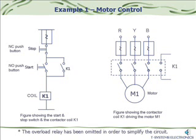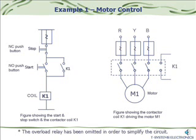We will work on the example of motor control and draw the ladder for the same. It requires the same logic as explained in latching circuits in our Part 1 series. The slide shows a figure at the left with a NO push button used for starting the motor, while the NC push button is used to stop the motor. Once started, the motor has to be latched, so the start button has the contact of the coil in parallel.